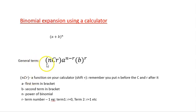The general term uses nCr, which is the combination function on your calculator. To access it, press Shift then the divide sign to get C. Whatever your n is goes before the C, and whatever your r is goes after — but let me explain what those mean first.